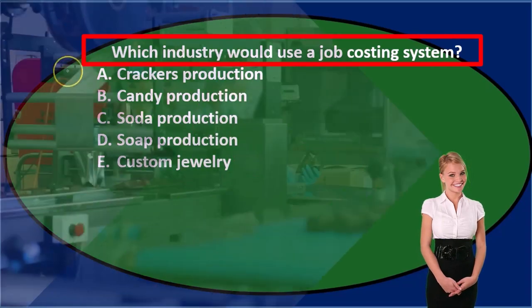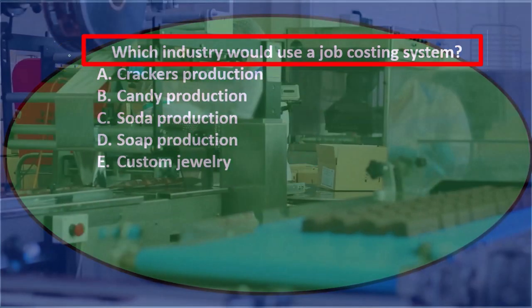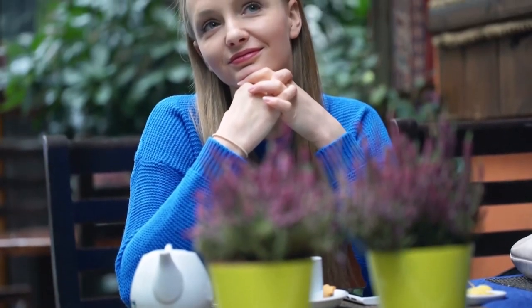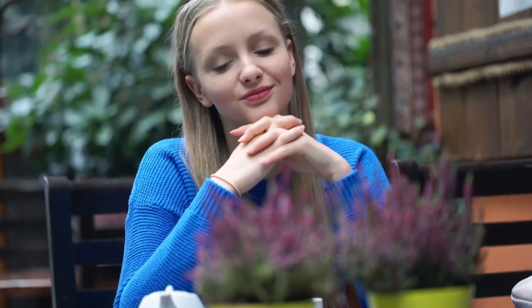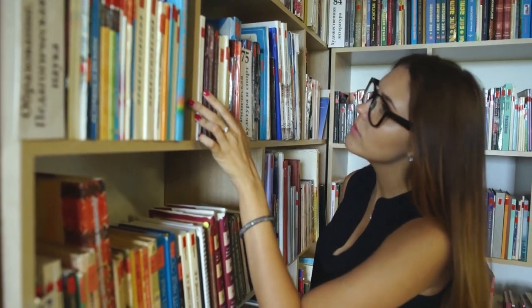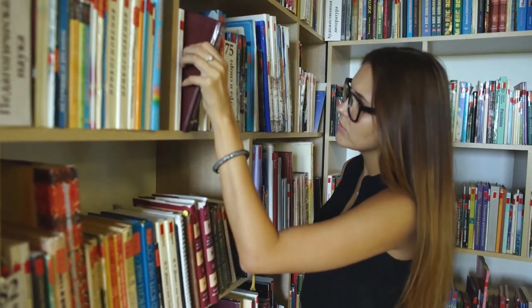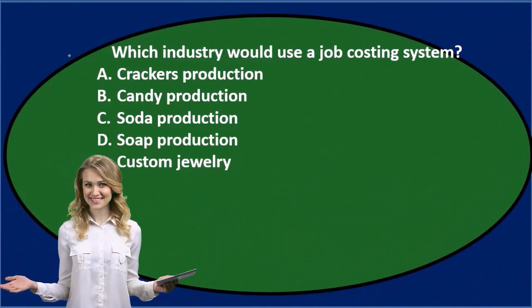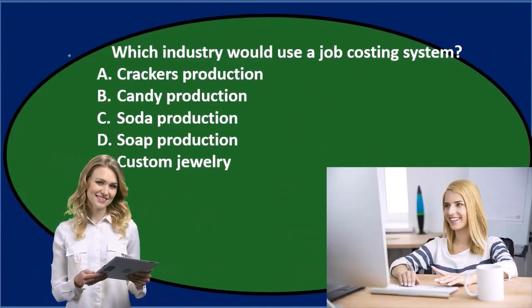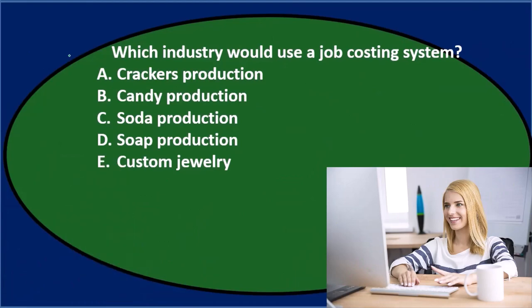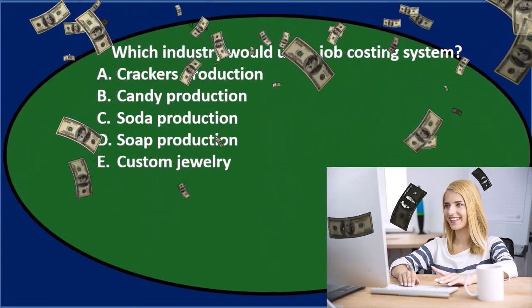Which industry would use a job cost system? When you think about a job cost system, we're really comparing and contrasting between a job cost and process cost system. The main distinction is: is there diversification in the types of things we're making? If there is, we're probably going to use a job cost system. If they're all totally the same, we'll use a process cost system to lower the cost. Job cost applies to specific inventory because items are different; process cost applies to the process because all inventory is the same.